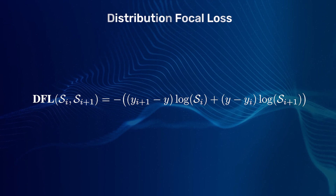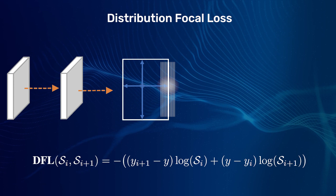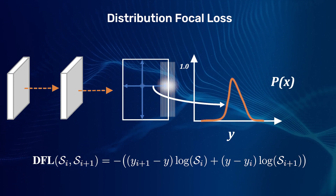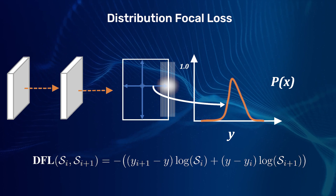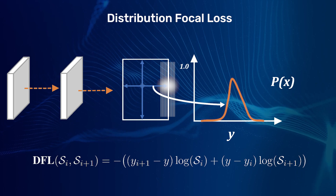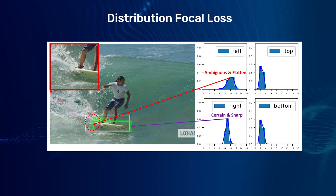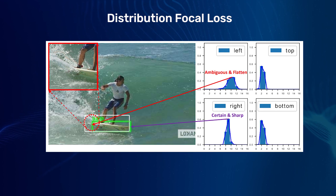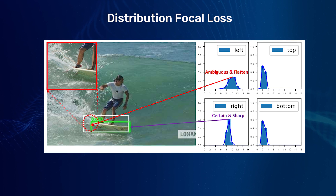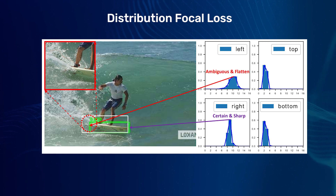The bounding box regression uses DFL. The idea is very interesting. Distributed focal loss models the location of bounding boxes as a general distribution instead of points. Doing so forces the network to focus on learning the probabilities of values closer to the target coordinates. This is particularly helpful when the boundaries of boxes are not clear due to occlusion, shadow, or blurring. Instead of predicting a point for the bounding box locations, it predicts the distribution as shown in the graphs.